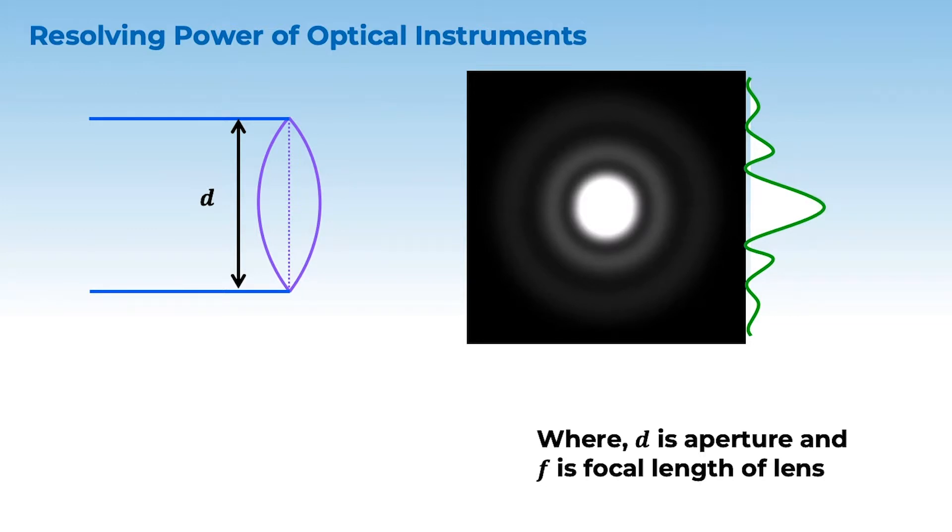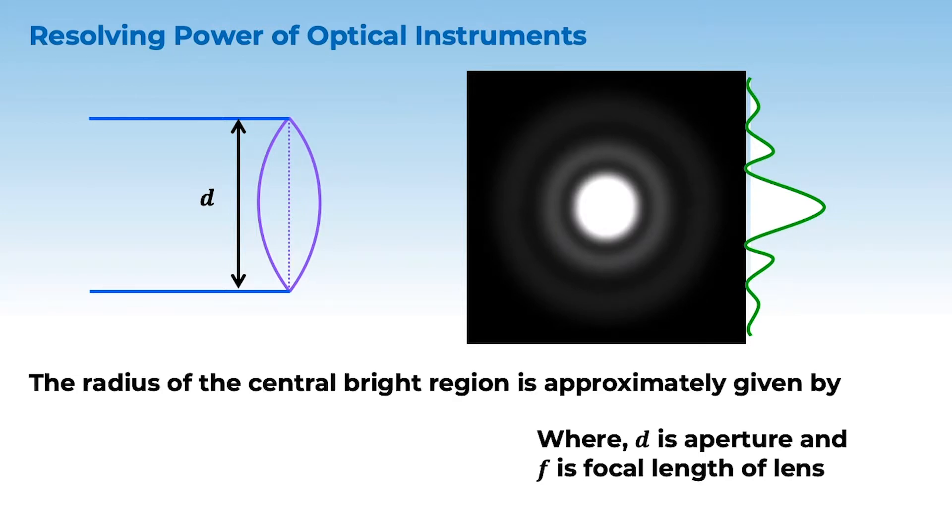Essentially what is happening is, the central maxima is what you see in that magnifying glass. So, the radius of the central bright region is approximately given by 1.22 lambda F by D. Here lambda is wavelength of light, F is focal length of the lens, and D is the aperture of that lens. So, R0 is defined as 1.22 lambda F by D, which is the radius of the central bright region.